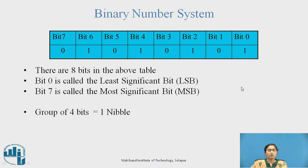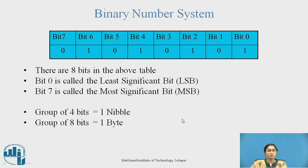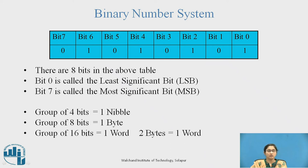A group of 4 bits is known as 1 nibble. A group of 8 bits is always known as 1 byte. A group of 16 bits is always known as 1 word, or it may be called 2 bytes.